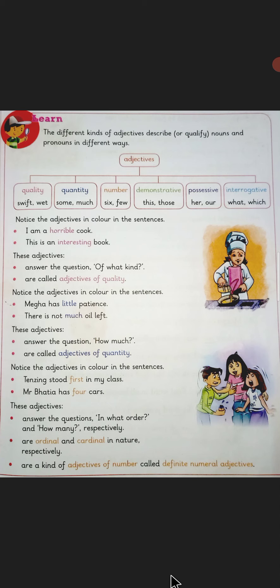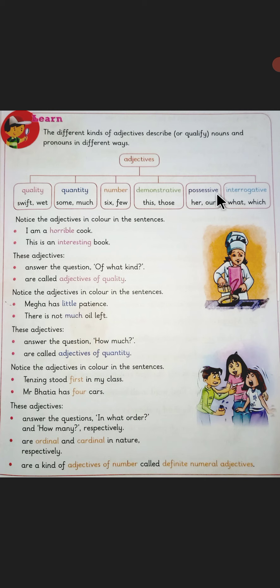Now this is a part of your book and what you see over here, there are some other types also. I had discussed adjectives of quality and adjectives of quantity last time, and in this video we will study ahead — we will study about adjectives of number, demonstrative adjectives, possessive adjectives, and interrogative adjectives.